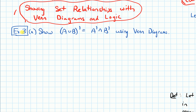I want to begin with an example. Part A asks us to show that the complement of A union B is equal to A complement intersected with B complement, using Venn diagrams.